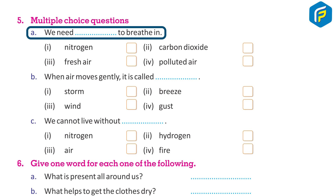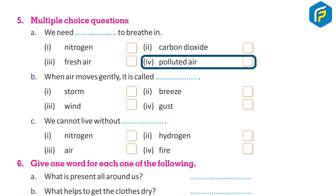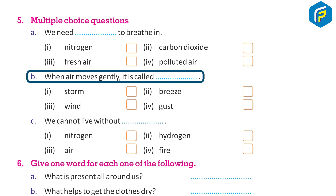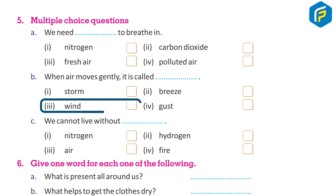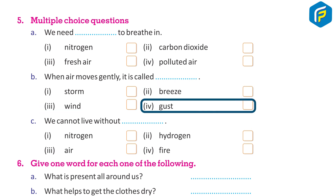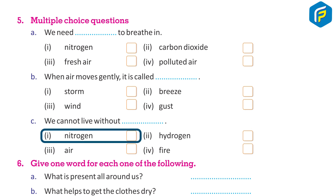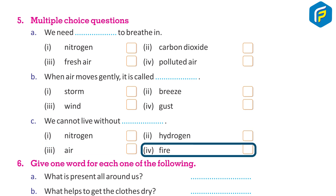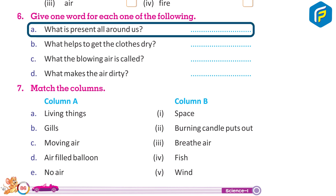Multiple choice questions: a) We need ___ to breathe in: 1. nitrogen, 2. carbon dioxide, 3. fresh air, 4. polluted air. b) When air moves gently it is called: 1. storm, 2. breeze, 3. wind, 4. gusts. c) We cannot live without ___: 1. nitrogen, 2. hydrogen, 3. air, 4. fire.